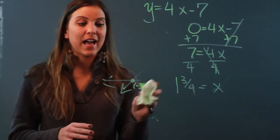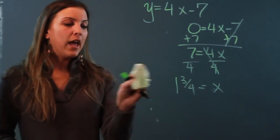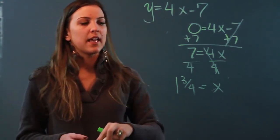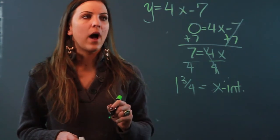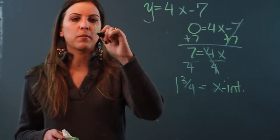So that means that this line right here is going to hit the x-axis between the numbers one and two. One and three quarters is the exact x-intercept. And for the y-intercept, remember we said that for the y-intercept x will always be zero.